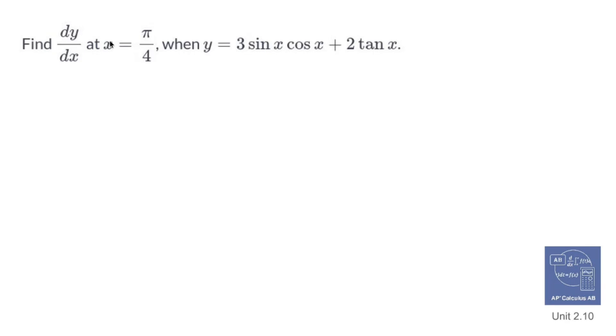Find dy/dx at x equals pi over 4 when y equals 3 sine x cos x plus 2 tan x. All right, so this is what I'm looking at.